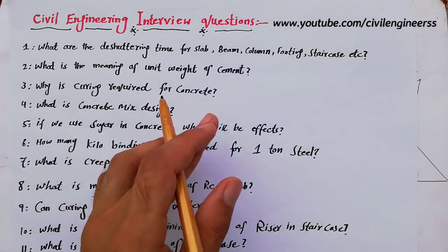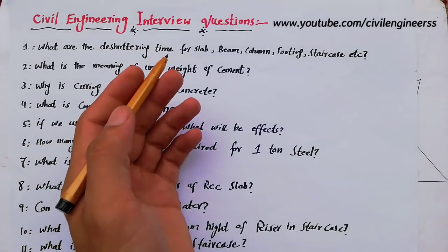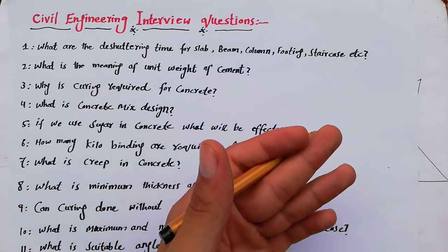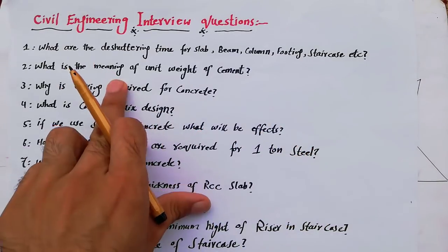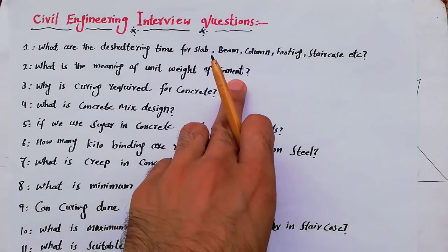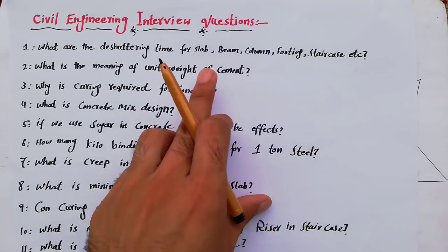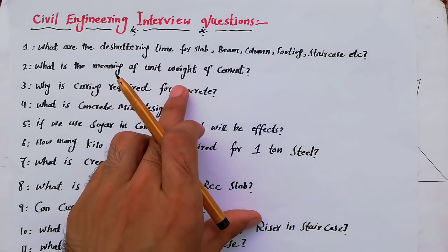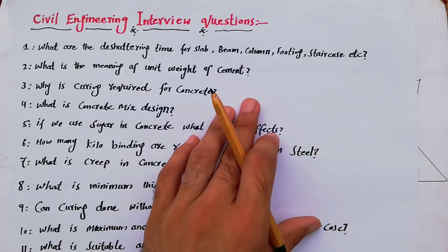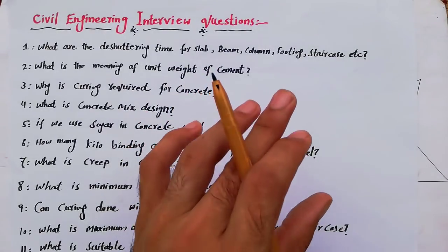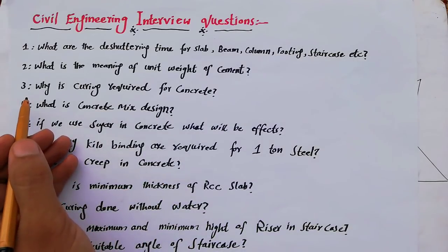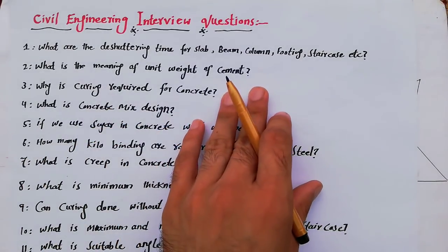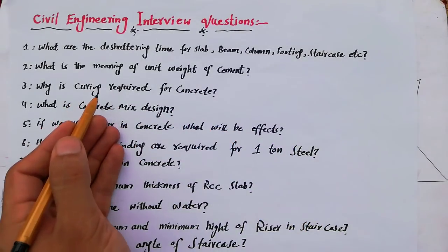The second question is: what is the meaning of unit weight of cement? We say this is the unit weight of cement and this is the unit weight of concrete. They can also ask you what is the unit weight of steel, what is the unit weight of cement, what is the unit weight of aggregate, and what is the unit weight of concrete.